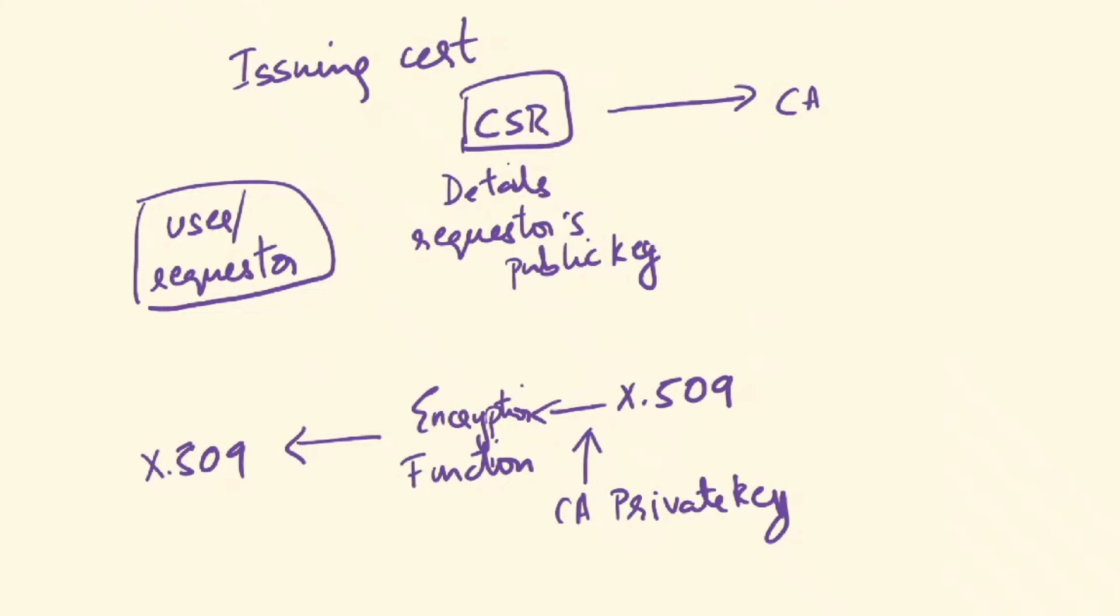So to summarize the certificate issuing process, first the requester is sending all the details and the requester's public key to the certificate authority of their choice. The CA will verify the details that are sent by the requester. Once the CA verifies that the requester is legit, it will take the public key of the requester and the details, put it in a certificate and then digitally sign this certificate using its own private key and then give it to the requester.